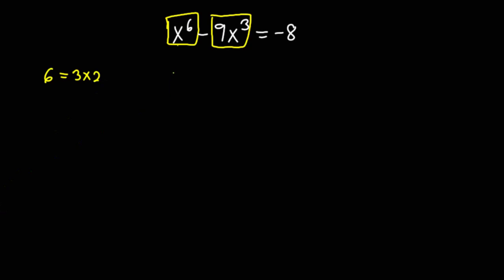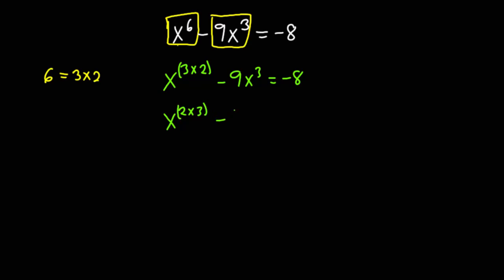What I'm going to do now is write x exponent 6 as x exponent 3 times 2, minus 9x cubed, equals negative 8. I can rewrite x exponent 3 times 2 as x exponent 2 times 3, because multiplication is commutative. So this minus 9x cubed is equal to negative 8.